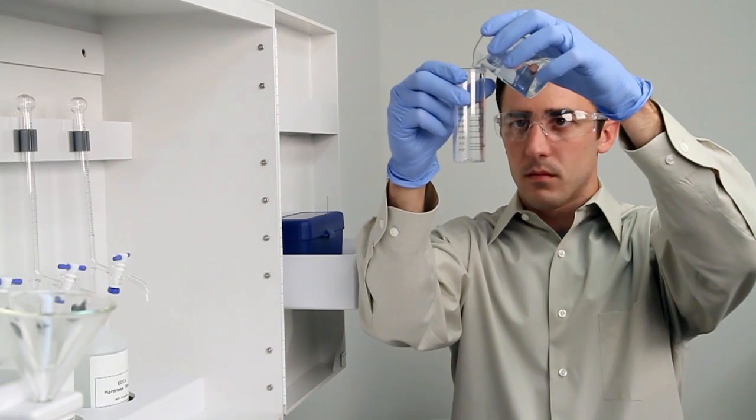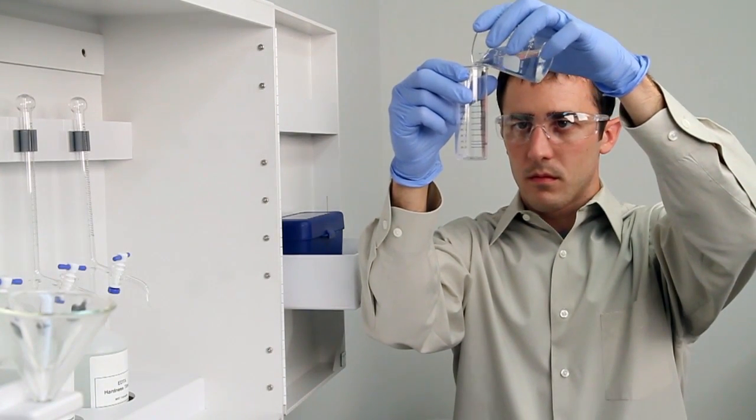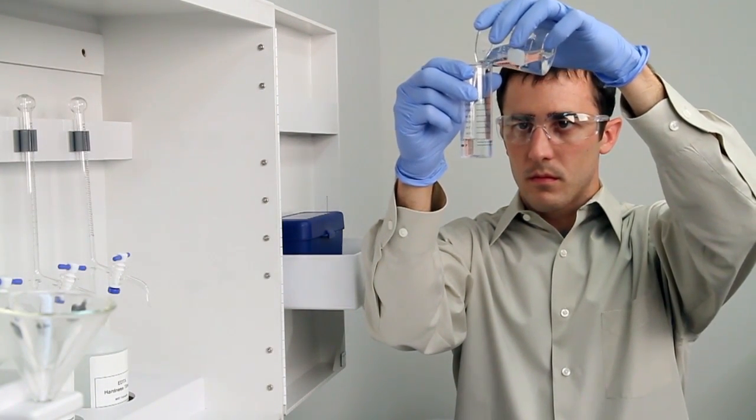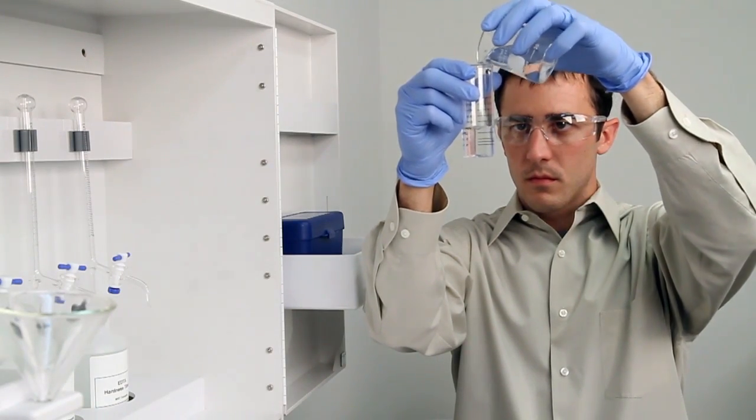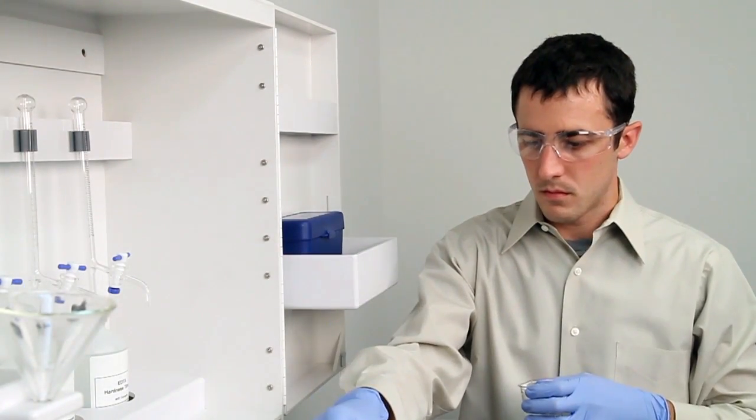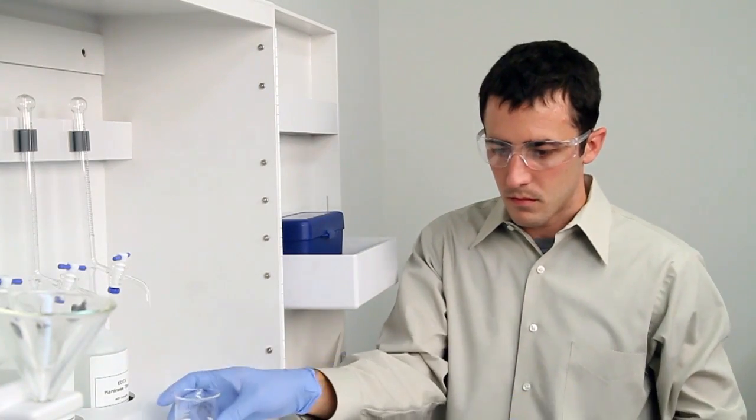To get an accurate sample, hold the vial close to eye level. Accuracy is very important during this step. Once you feel you have an accurate sample, place the vial on a level surface and bend down to eye level to verify.